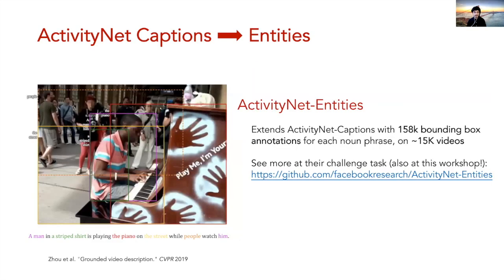Before getting into some of those details, a brief aside to describe related datasets that have come from ActivityNet Captions. One key example is the ActivityNet Entities dataset from Chao et al., introduced in 2019. This is now also a challenge task in the ActivityNet workshop, and we encourage you to take a look at their results and challenge details at their website.